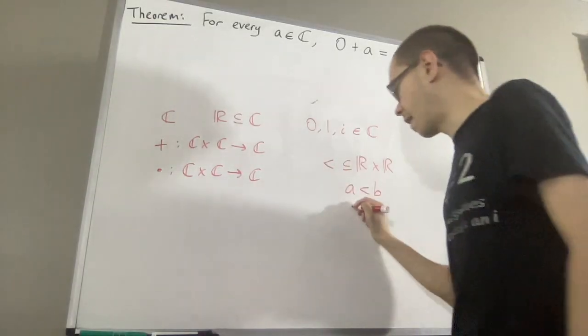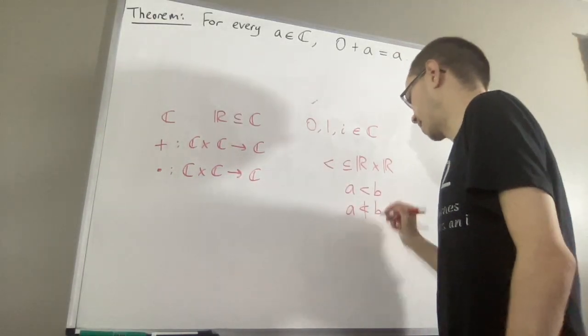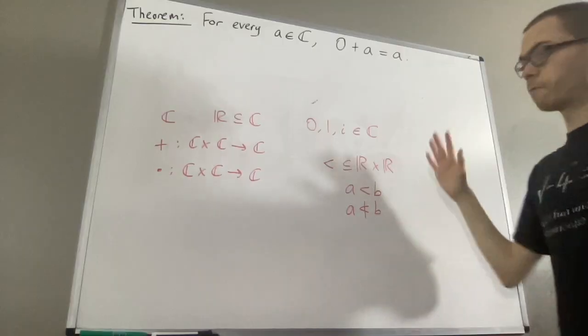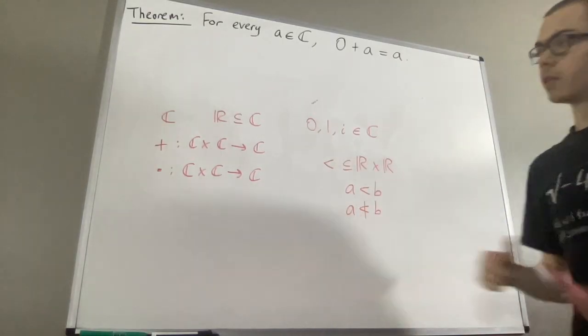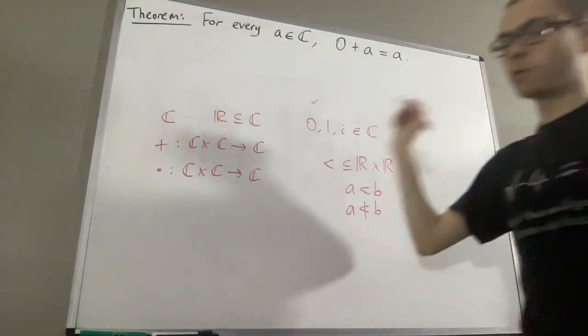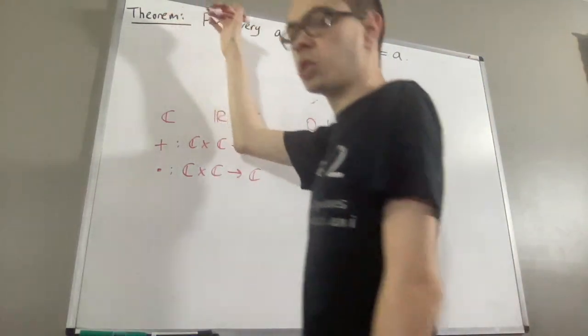Otherwise, we have that a is not less than b. And from here we have a list of axioms for the complex numbers. Now let's remind ourselves of axiom 4, which is the associative law of addition.